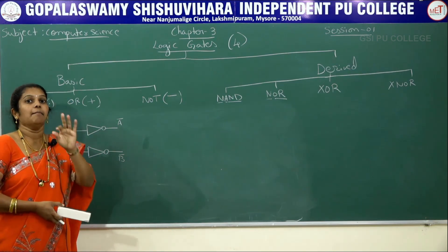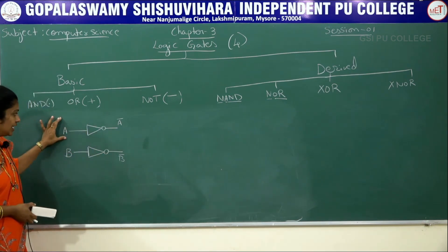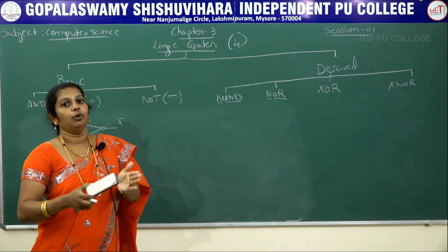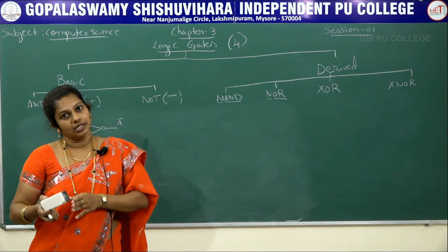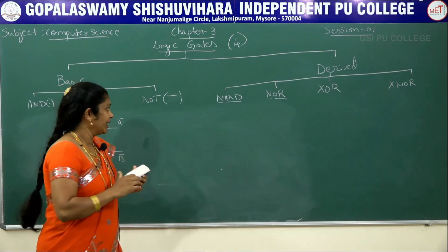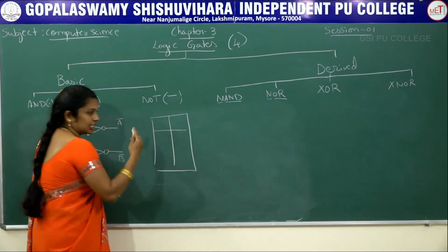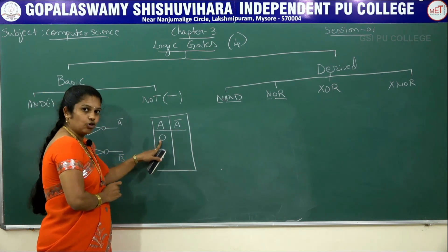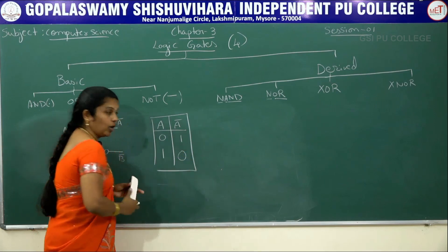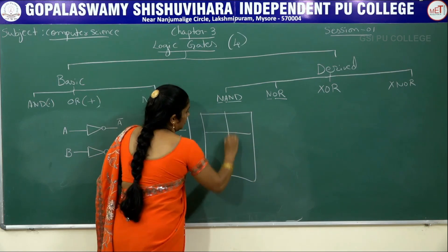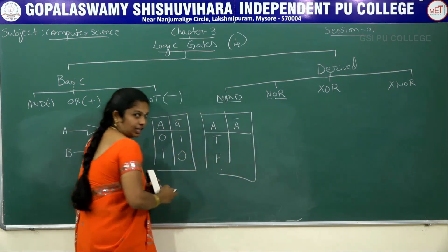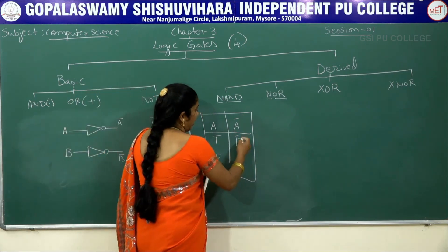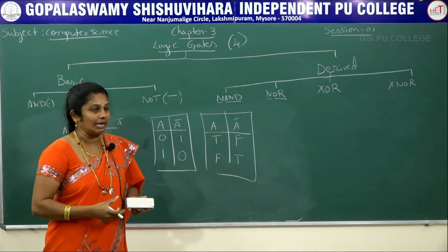In NOT gate, maximum only one input and only one output. The output is displayed in reverse: if input is true the output is false, if input is false the output is true. For one variable A, we get two combinations: if A=0 the output A bar=1, and if A=1 the output A bar=0. You can also write it as true/false: if input is true the output becomes false, if input is false the output becomes true. NOT gate is also called inverting gate.